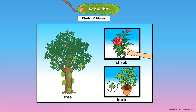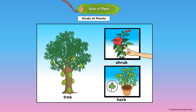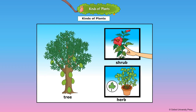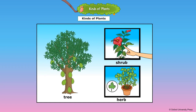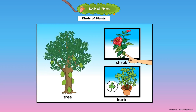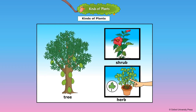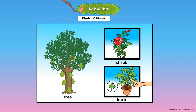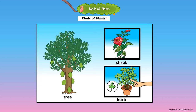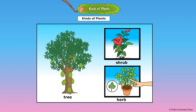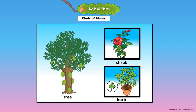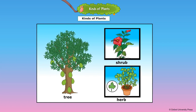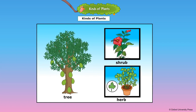This is a shrub. This plant is not as big as a tree. Small plants with woody stems are called shrubs. This is a herb. Small plants having soft stems are called herbs. Trees, shrubs, and herbs always grow on land.